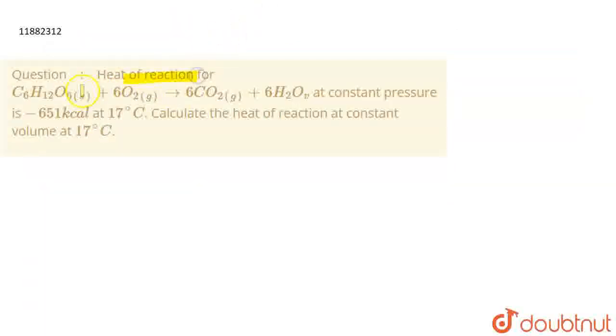Question is: Heat of reaction for C6H12O6 plus 6O2 giving 6CO2 plus 6H2O at constant pressure is minus 651 kilocalorie at 17 degree Celsius. Calculate the heat of reaction at constant volume at 17 degree Celsius.